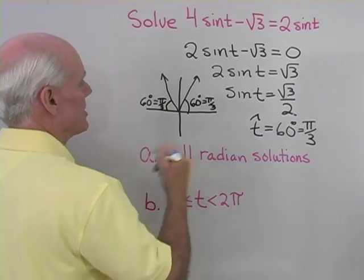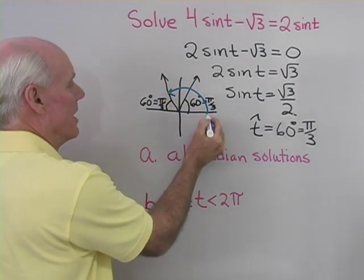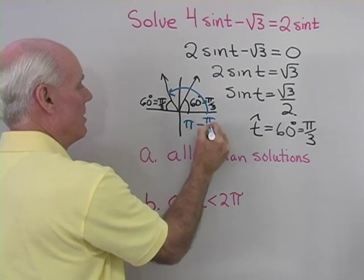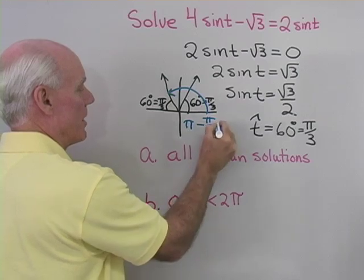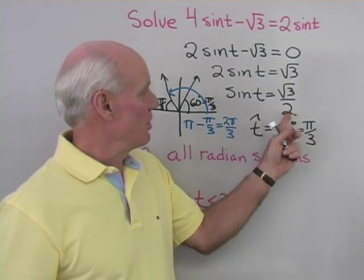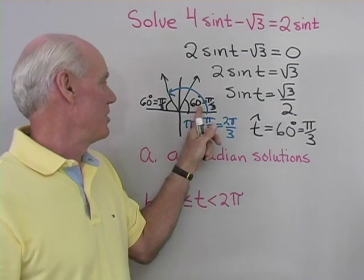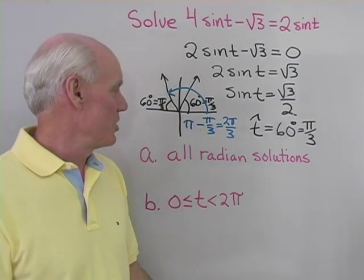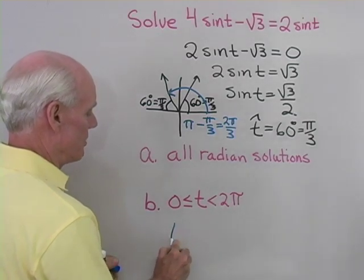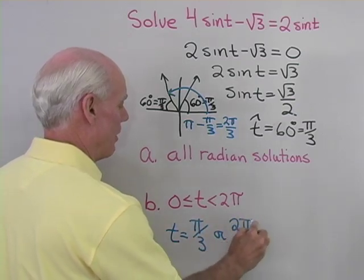I want to name the angle in quadrant 2 in radians. That will be pi minus pi over 3, which is 3 pi over 3 minus pi over 3, giving 2 pi over 3. So if sine t equals square root 3 over 2, the reference angle is pi over 3, the angles must be in quadrants 1 or 2, giving t equals pi over 3 or 2 pi over 3.